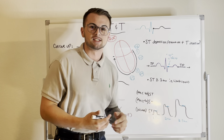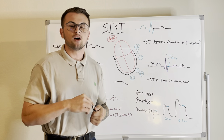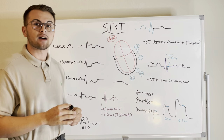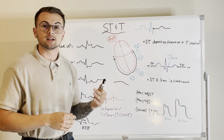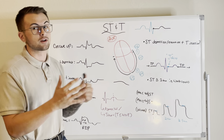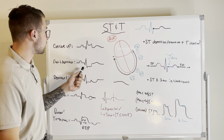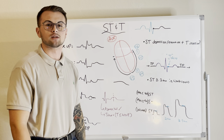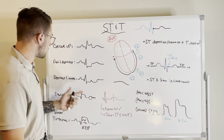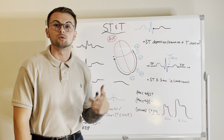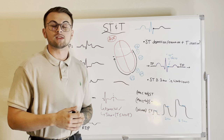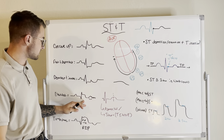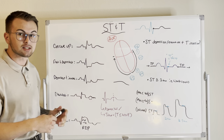The ST segment comes in a lot of different shapes and sizes. Concave up shapes could indicate some sort of strain, pericarditis, or could just be normal. Flat or depressed ST segments could indicate ischemia — specifically subendocardial ischemia. An ST depression that is also inverted could indicate a potential strain pattern. A flat or elevated ST segment with or without T wave inversion could indicate some sort of injury.